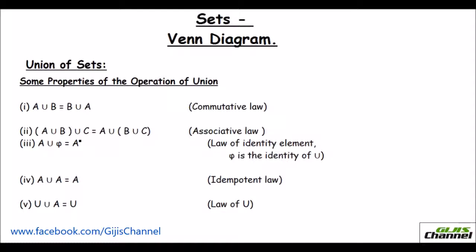In associative law, we normally take three sets. First you do A union B, and then that answer union C — that would be equal to A union B union C. That is the associative law.